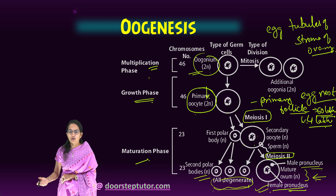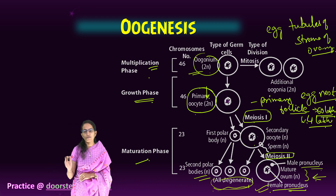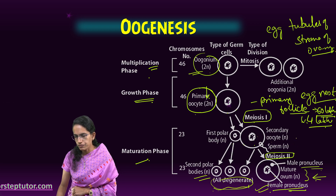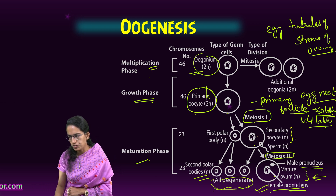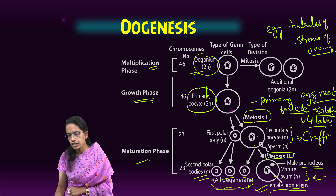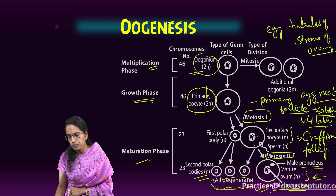This mature ovum has a female pronucleus along with a male pronucleus which is formed. Ovulation is the process of release of the secondary oocyte after puberty every month from the Graafian follicle, and this is one of the important stages of the reproductive cycle.